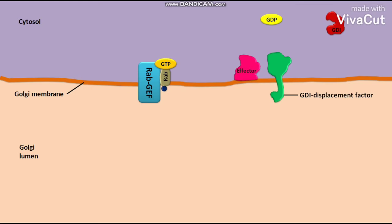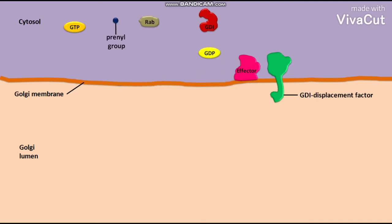The active Rab-GTP then interacts with the effector protein. Now let us consider the second case, in which the membrane has no Rab-GEF. In this case, the prenyl group binds to the Rab and the Rab gets modified. The modified Rab can then insert into the membrane.